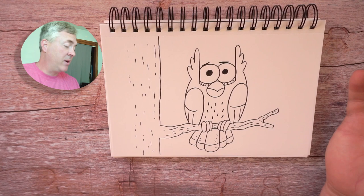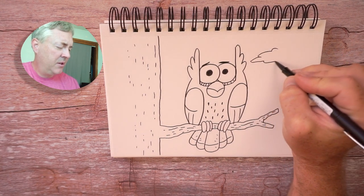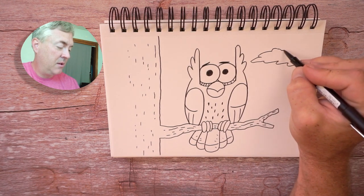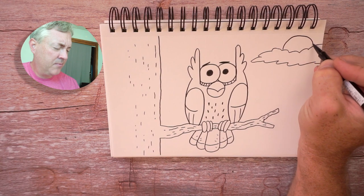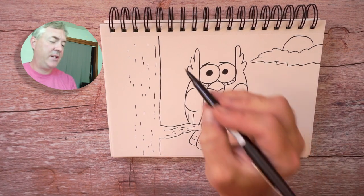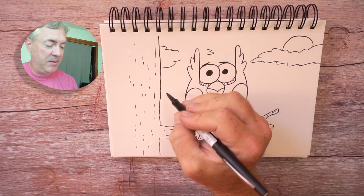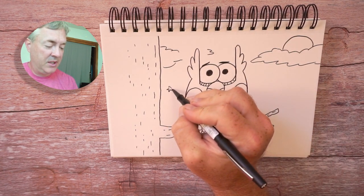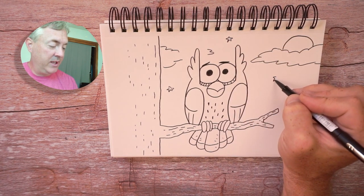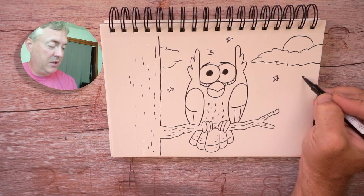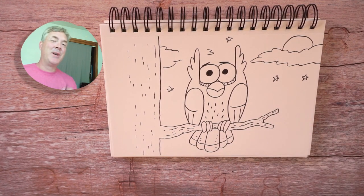Then it's up to you what else you want to add. We could draw some clouds in the background and a moon. It's up to you what you want to add to your character. You could draw leaves in the trees, whatever you like, maybe a few little stars. What we're doing now is we're drawing a setting. We're letting you know that it's nighttime, and our owl is sitting in a tree, hooting away.